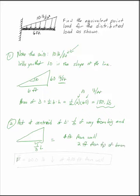Answer the question. You were asked to find the equivalent point load, so I'm going to say my equivalent point load is 60.0 pounds down. A force is a vector, so you've got to have units and direction at 4.00 feet from the wall.